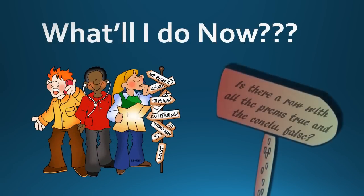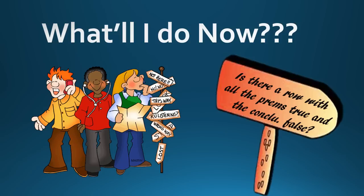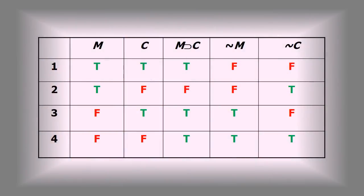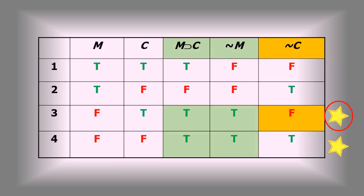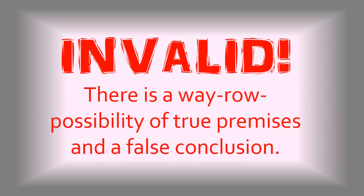The real question is what to do with it. I want to look and see if there's a row, left to right, where all the premises turn out true and the conclusion false. Examining the table, with premise columns highlighted in green, rows three and four are where both premises turn out true. I put stars beside those rows, then look at the conclusion column. There is one row where the premises turned out true and the conclusion false. I circle that star — that invalidates the argument. There is a possibility of all true premises and a false conclusion, which is by definition an invalid argument.